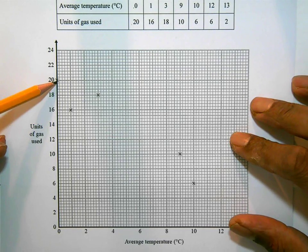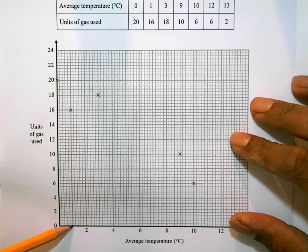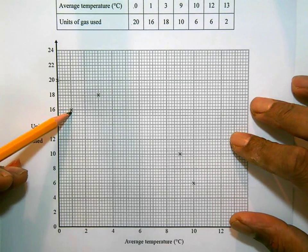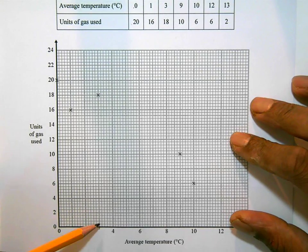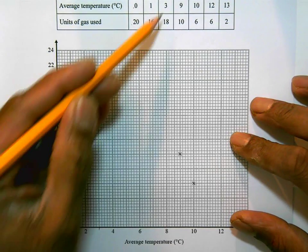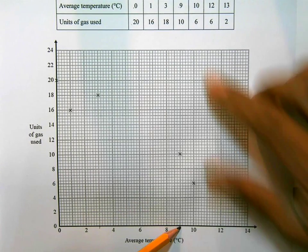3, 18. A temperature of 3 is there, and that goes up to 18. A temperature of 9. So that's 8, that there is 9, and the units of gas used is 10. That's correct. And then 10, 6. Alright, so I just need to plot these two here.